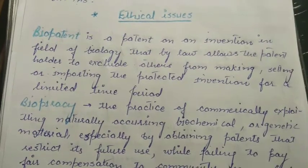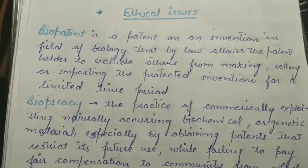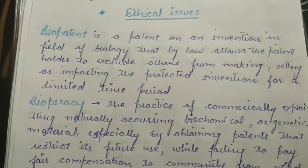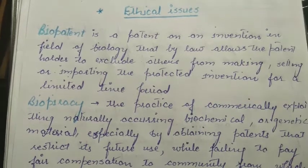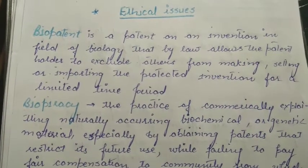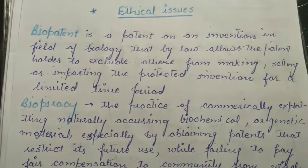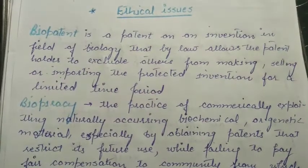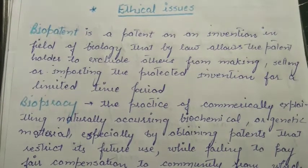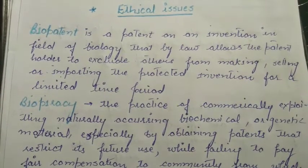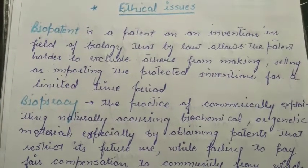The last topic of this chapter is the ethical issues related to biotechnology, transgenic animals, or the production of biotechnologically derived products. Why do people oppose transgenic animals or biotechnologically derived drugs? The reason is that every organism has inherent value. People believe that organisms should not be manipulated for the benefit of humans, and that testing medicines or drugs on transgenic animals can harm them. This is why biotechnological products are not fully accepted by all sections of society.